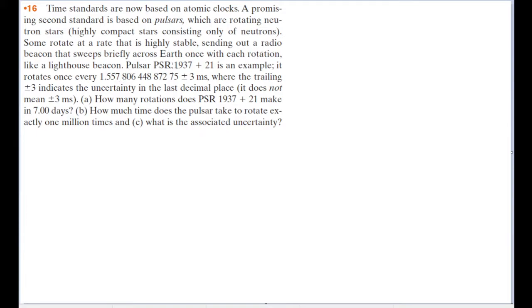Pulsar PSR 1937 plus 21 is an example. It rotates once every blah blah blah milliseconds, where the trailing plus or minus 3 indicates the uncertainty in the last decimal place. It does not mean plus or minus 3 milliseconds. How many rotations does PSR 1937 plus 21 make in 7 days? How much time does the pulsar take to rotate exactly a million times, and what is the associated uncertainty with that?